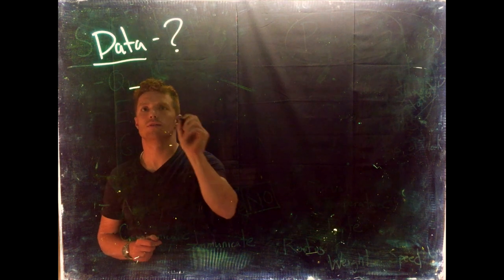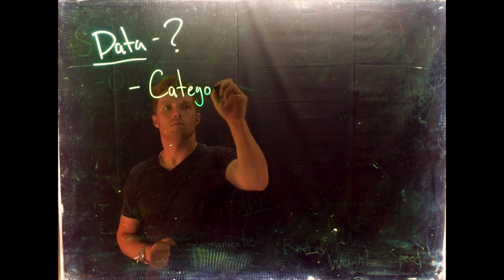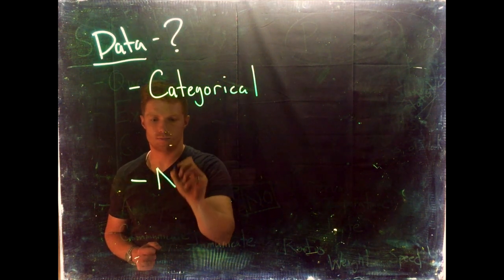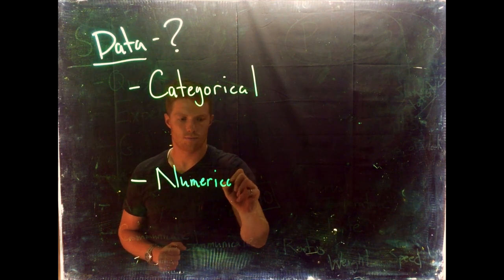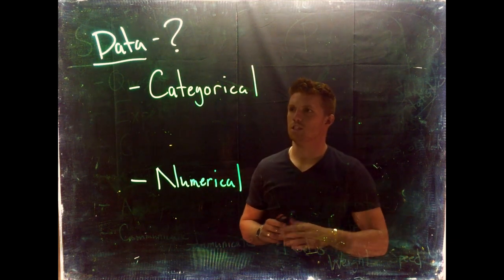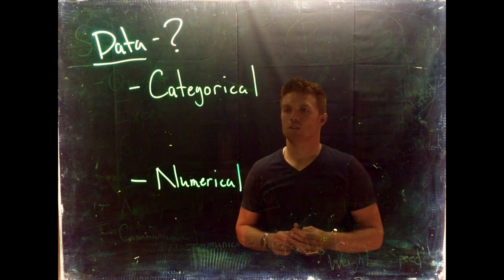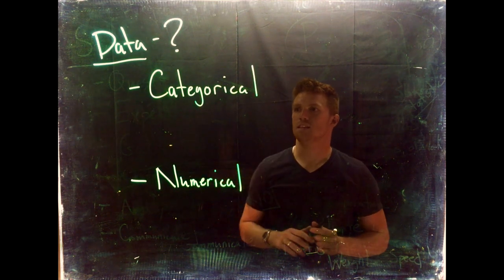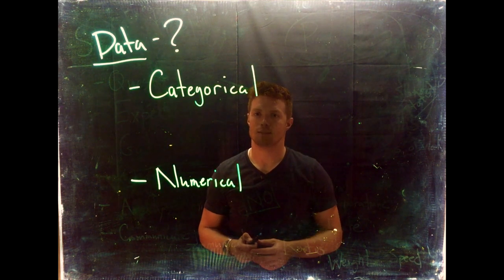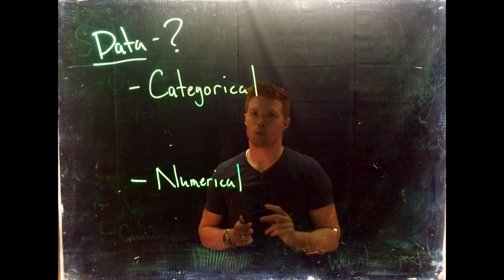We have categorical and we have numerical. The words do a lot of the descriptions here. Categorical - we can think about categories of our data. These are things that aren't expressly measured; we haven't gone out and put a ruler down or used a stopwatch. Rather, these are things where we can talk about colors, names of football teams - those are categories.